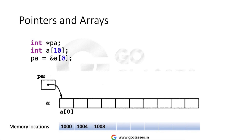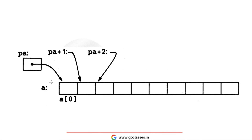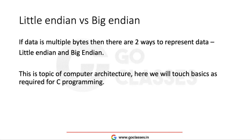Now let's see pointers and arrays. Suppose P is an integer pointer and A is an array. I want P to point to the first element of the array, since the first element is an integer and P is an integer type pointer. I can make P point to A[0]. Then P + 1 will move to the next integer, and P + 2 will move to the integer after that.